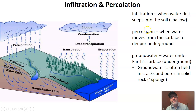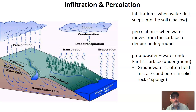Now, percolation is very much like infiltration, but percolation is happening much deeper. This is still the movement of water from the surface, deeper underground — that's what percolation is. The difference is that infiltration is very shallow, whereas percolation means that the water is moving deeper and deeper underground.